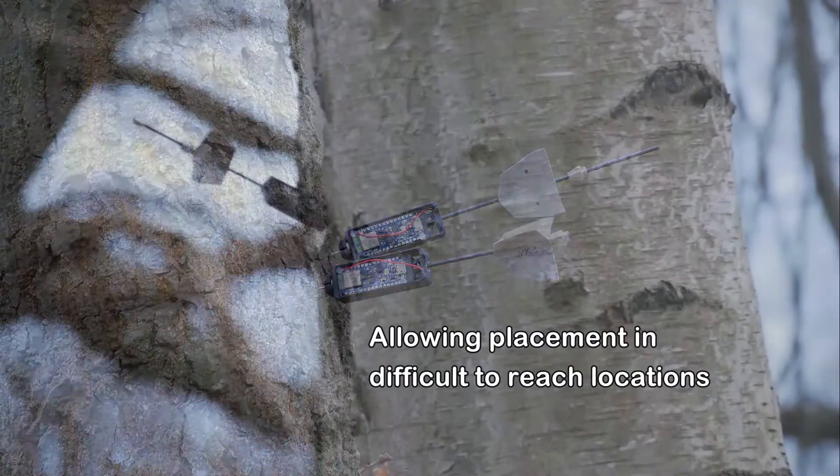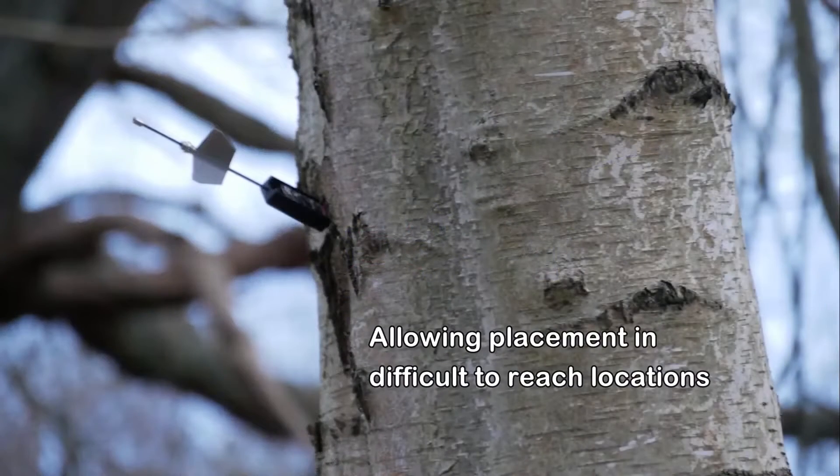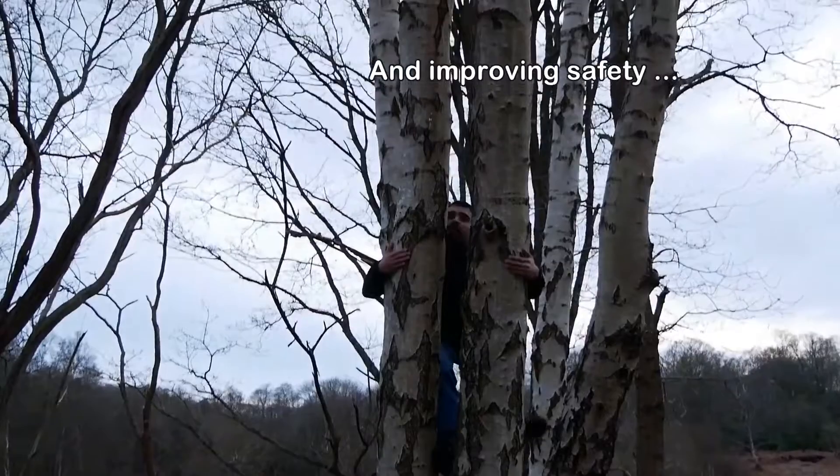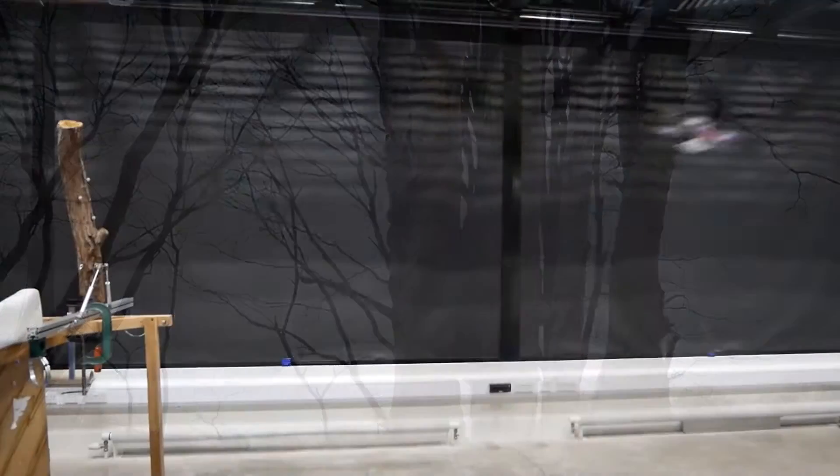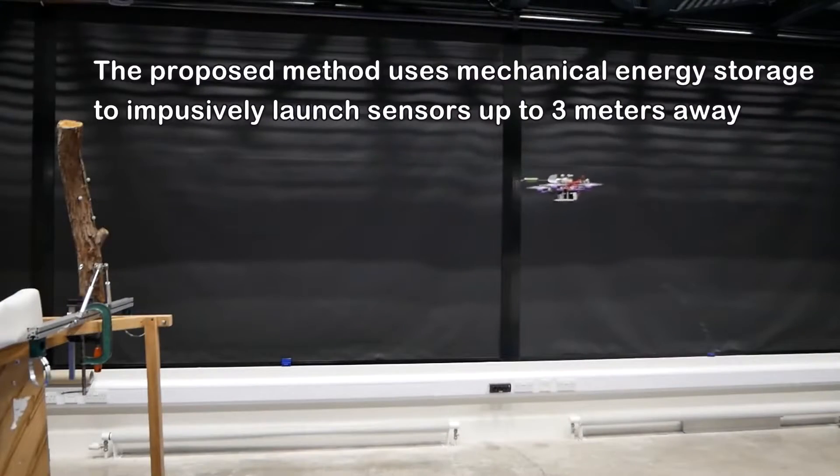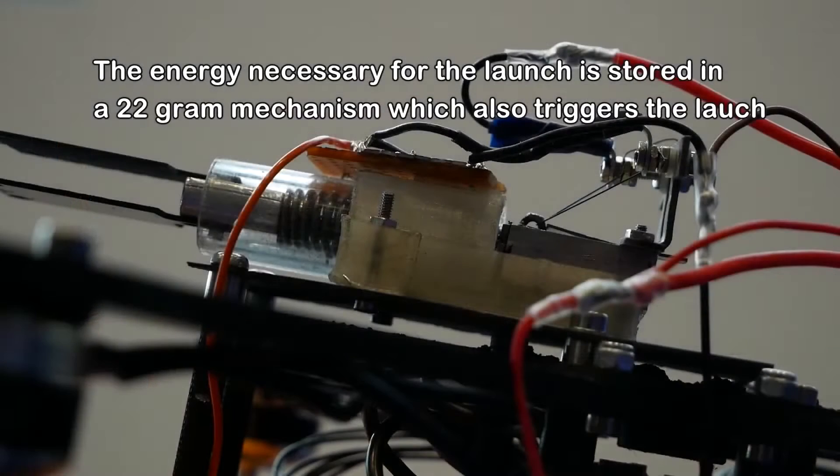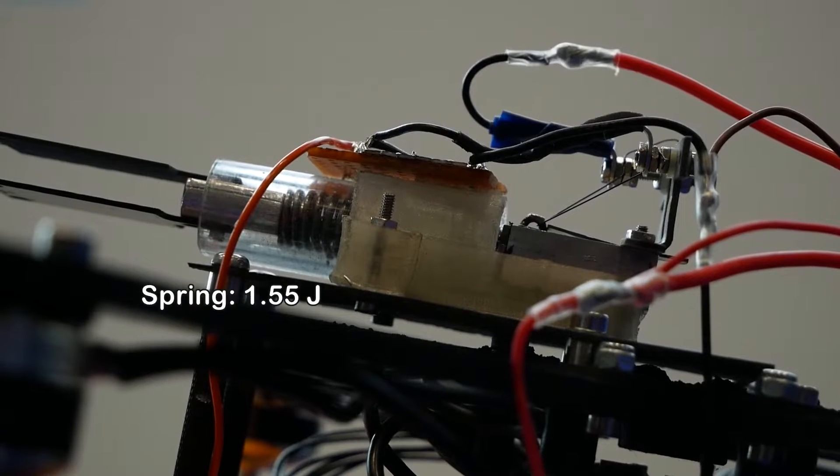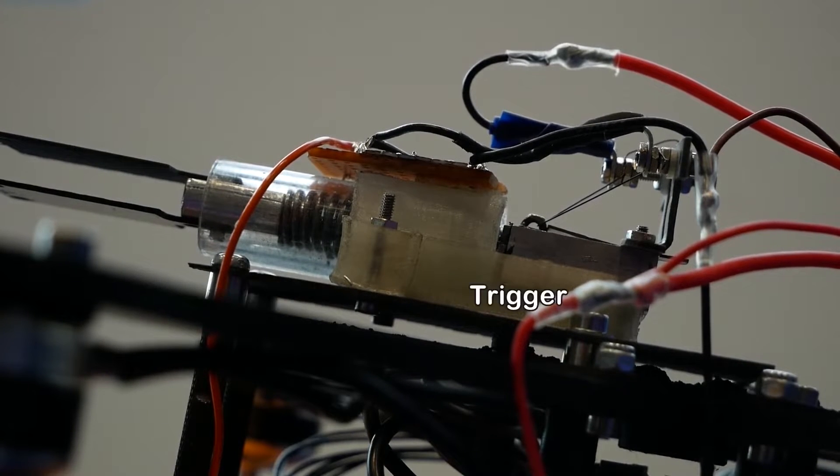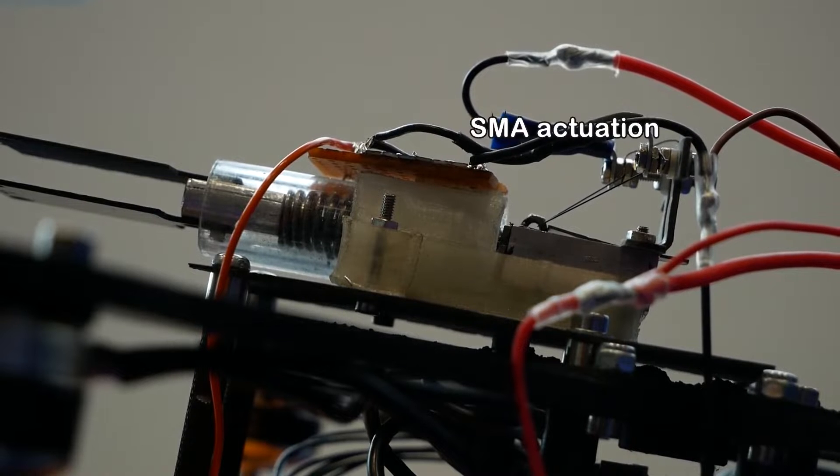The concept of deploying drones for sensor deployment is not new. One could either drop its cargo or use an extension arm to position it on a vertical surface. However, both have drawbacks, such as the necessity to approach the target closely in the case of an extension arm. Instead, researchers at Imperial College London's Aerial Robotics Laboratory have been investigating a method to fire sensor darts from the aerial robots.